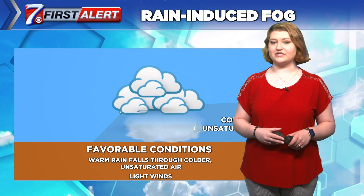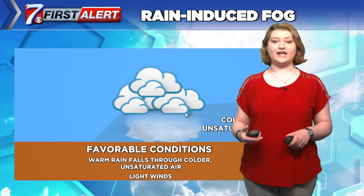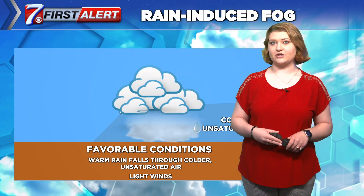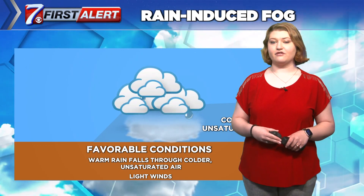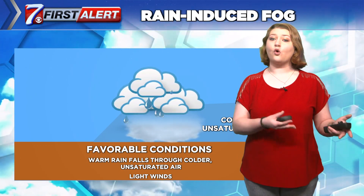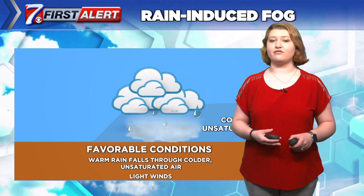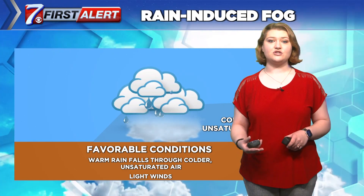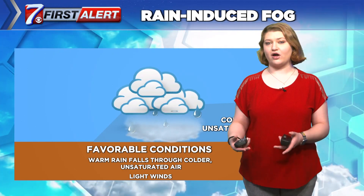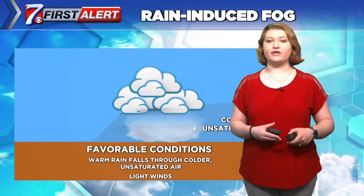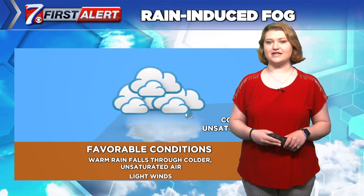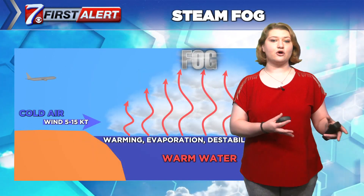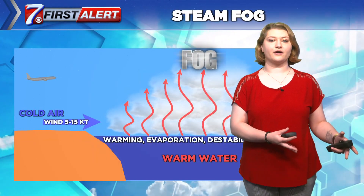Rain induced fog is persistent, covers a wide area, and mostly occurs with warm fronts or stationary fronts. The fog forms on the cold air side of the front. Fog formation stops when the precipitation stops; however, fog and low clouds often continue.